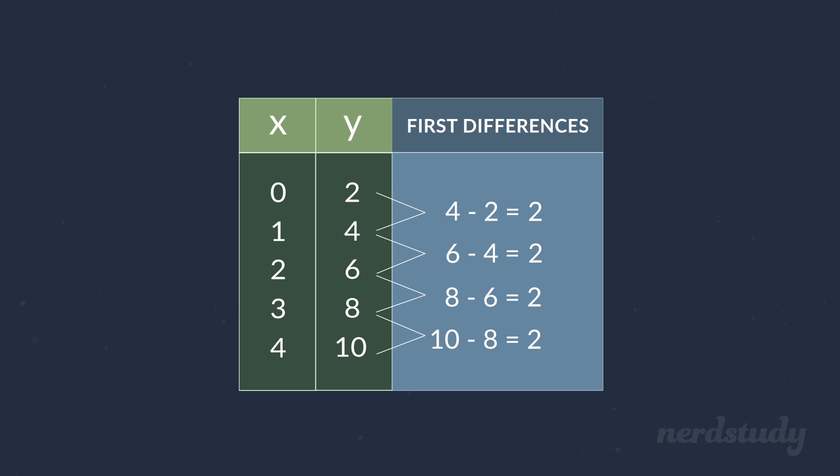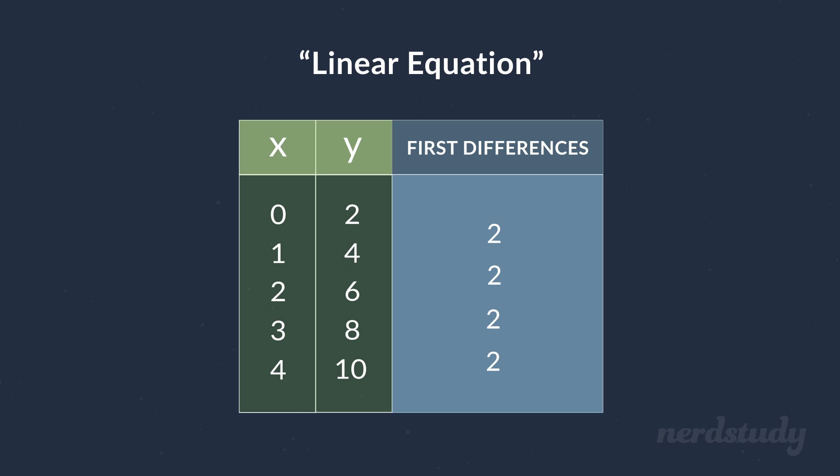So notice how our first differences are constant in that all of the first differences are the exact same value. When the first differences are constant, we can say that the coordinates are plotting out a linear equation. And it turns out to be the case that all linear equations have a constant first difference.